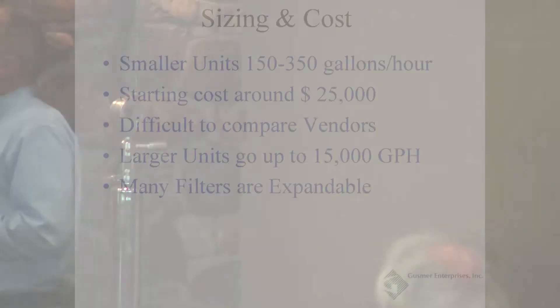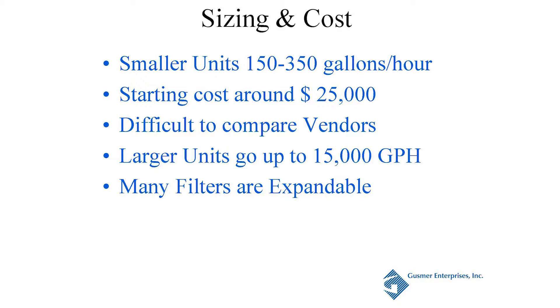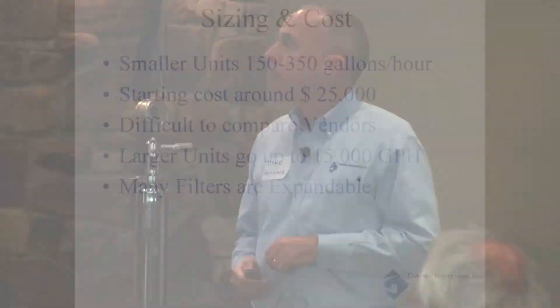Let's talk about sizing and cost. The smallest unit will do about 150 to 350 gallons an hour — 150 gallons per hour for very high-solids dirty red wine, 350 for a clean Sauvignon Blanc. The smallest unit I have seen is about $25,000 brand new. It is tough to compare vendors — a 60 square meter filter from supplier A may not give you the same flow rate as supplier B's 60 square meter filter. Don't just make it a square meter comparison.